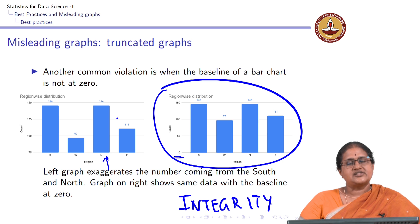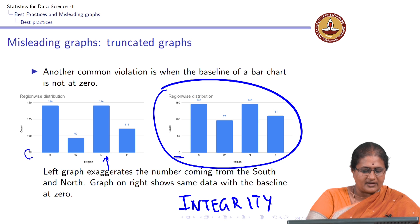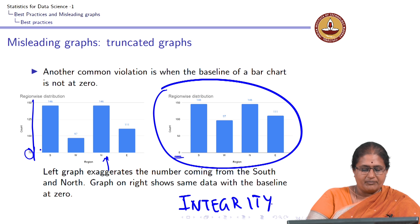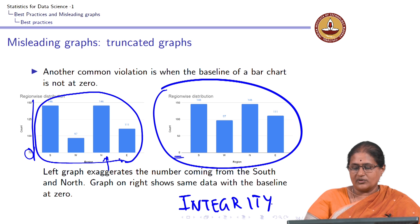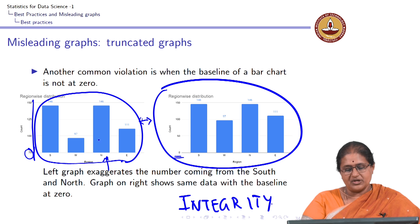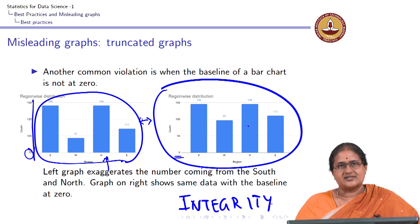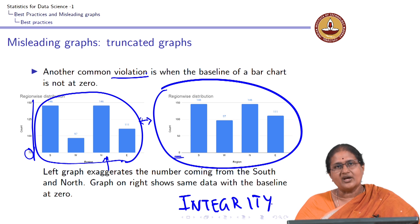The graph with baseline at zero is recommended because this is where data integrity is maintained and the actual story is told. When you are showing growth and you truncate the graph or misrepresent data, people will attribute a wrong story to it. Even though both represent the same data, visually they tell different stories. Whenever you truncate a graph, there is a loss in information and it is a violation — this has to be avoided.